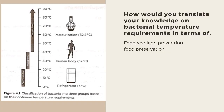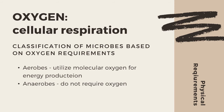By now, you would be able to translate your knowledge on bacterial temperature requirements in terms of food spoilage prevention as well as food preservation. This brings us to another physical requirement of bacteria, and this is oxygen. Oxygen is an important element because it is needed for cellular respiration, which is the process by which cells produce adenosine triphosphate — the energy molecule of the cell. Microbes can be classified based on oxygen requirements. Those that utilize molecular oxygen for energy production are called aerobes, while those that do not require oxygen are called anaerobes.